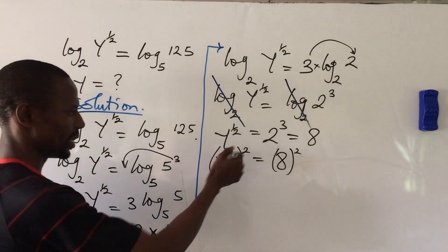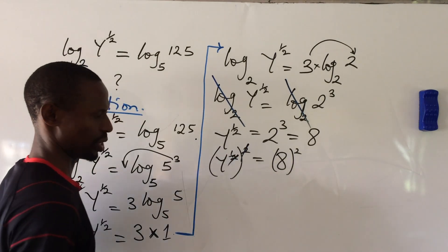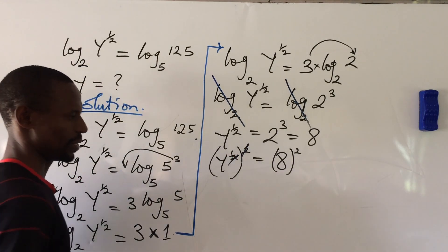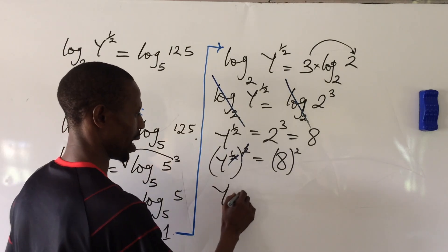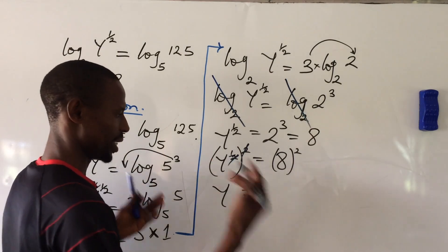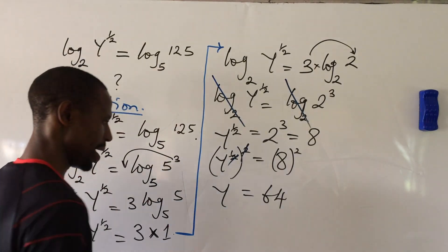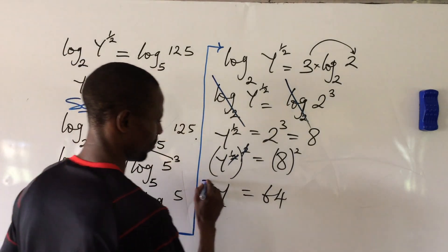These two here go with this two here. If we open up the bracket, here we're now left with y equals 8 to the power of 1/2, which is 8 times 8, which is 64. So our y is therefore 64. Q.E.D.